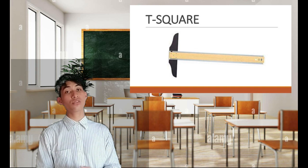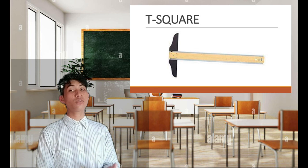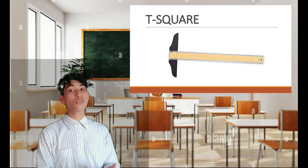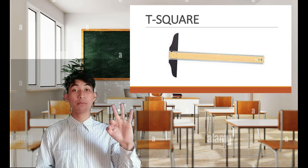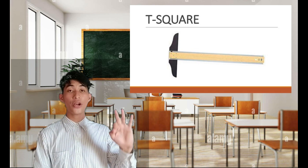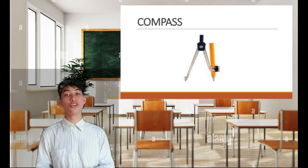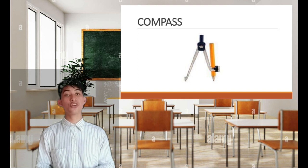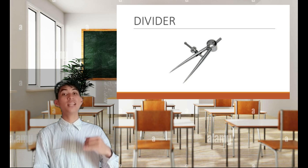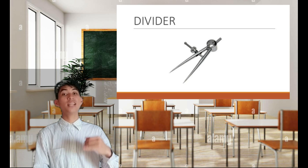Next is the T-square, used to draw horizontal lines. It is also used for guiding triangles when drawing vertical lines, typically made up of wood, plastic, or a combination of both. There are three types of T-square: the fixed head T-square, the movable or adjustable T-square, and the detachable or removable T-square. Next is the Compass, a drawing instrument used when drawing arcs and circles, used in a similar way to a divider. Next is the Divider, an instrument used to transfer accurate measurements easily by adjusting the divider points. It is similar in use to the compass.